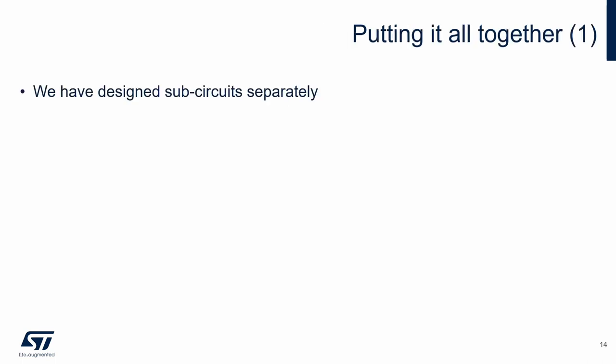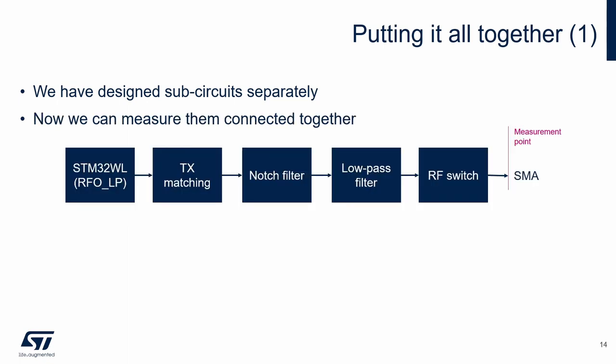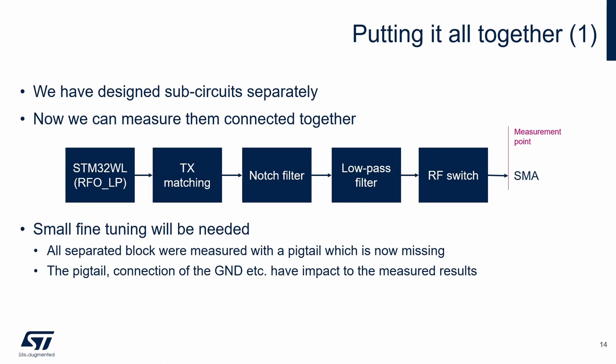In the previous step we designed the low-pass filter in isolation from the previous blocks. In this step we connect it to the blocks which were designed before. We will use an unmodulated carrier signal from the RFO-LP output and measure the transmitted signal on the SMA connector. The connection usually slightly changes the previously measured parameters, so the low-pass or notch filters might need fine-tuning. One reason is that all separated blocks were measured with a pigtail, which is now missing and which adds some parasitic impedance. The pigtail and how it is connected to ground also impact the measured results.